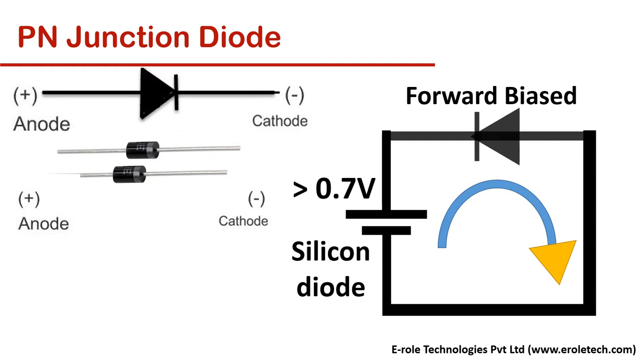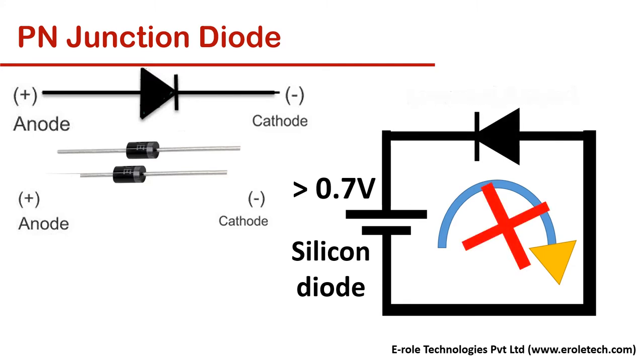Diode restricts the flow of current in reverse biased. There are various types of diodes. Every type has a different model number and characteristics.